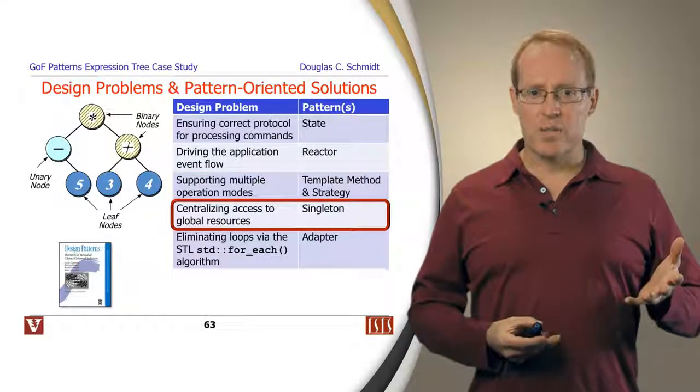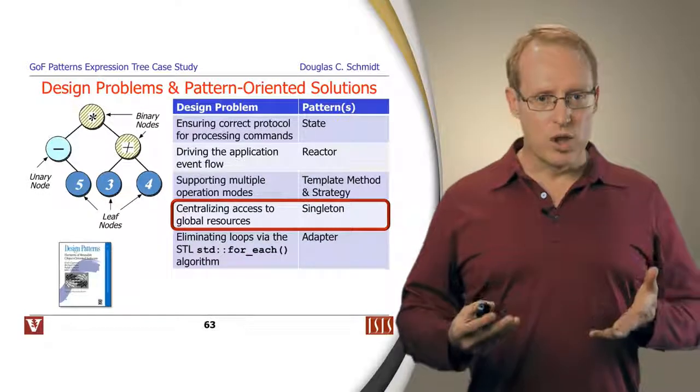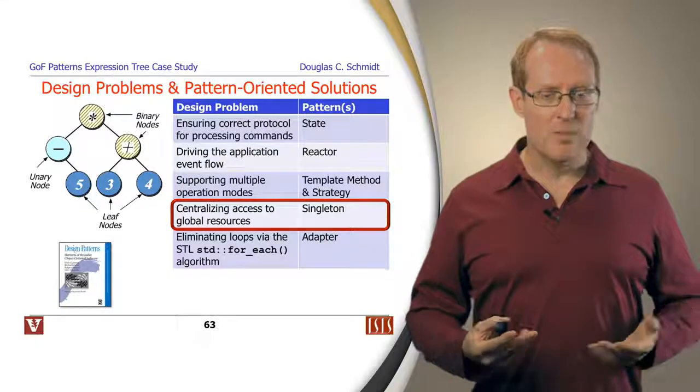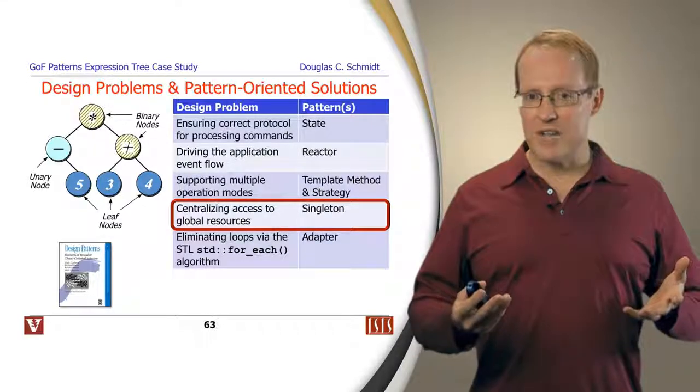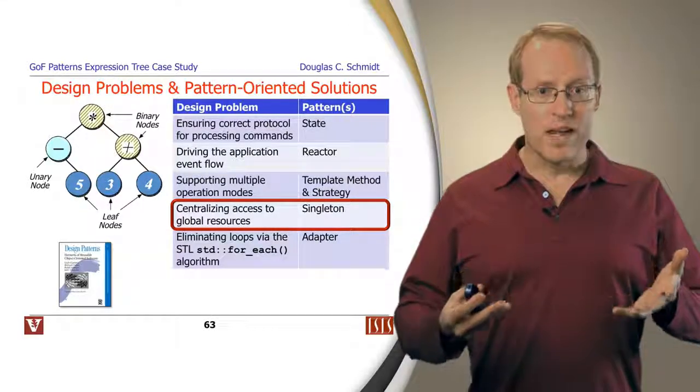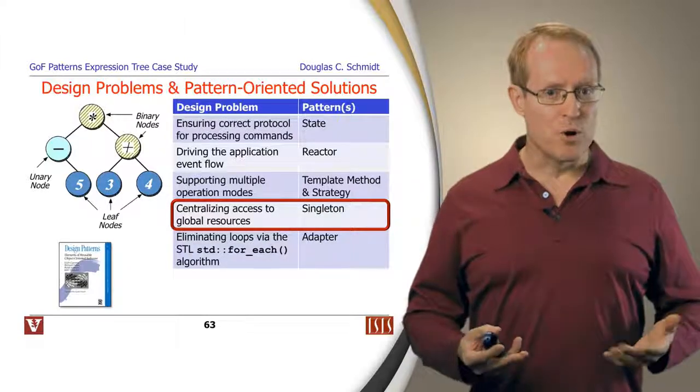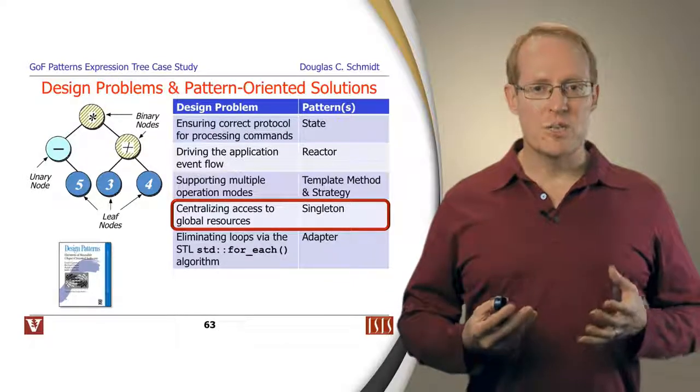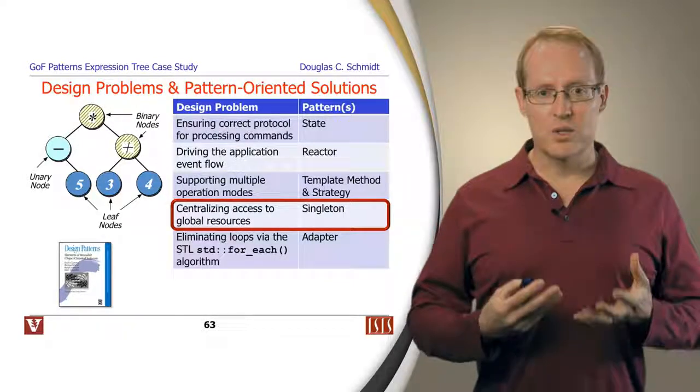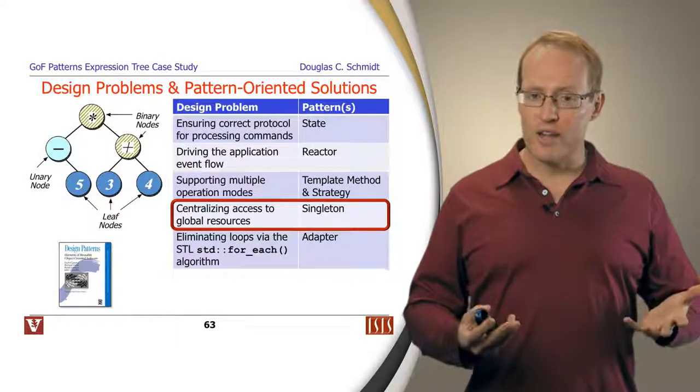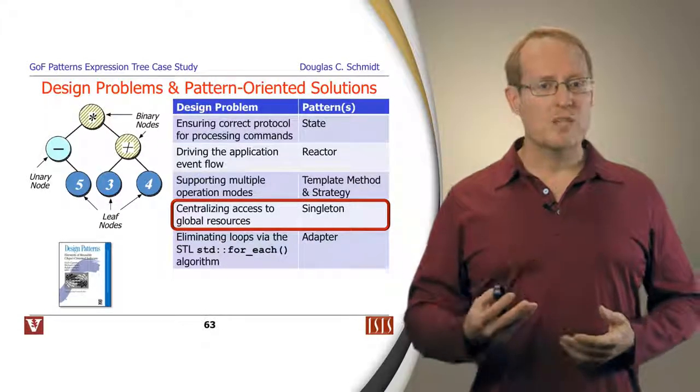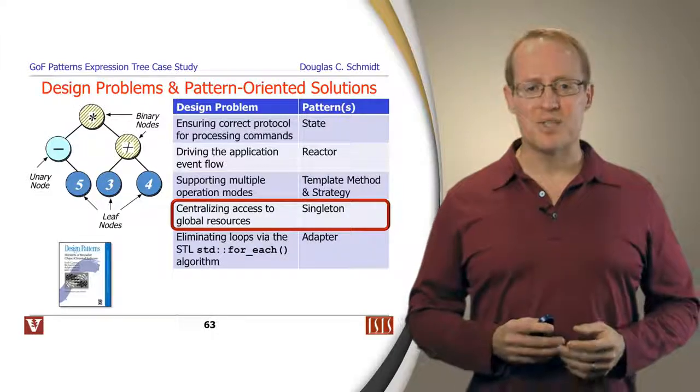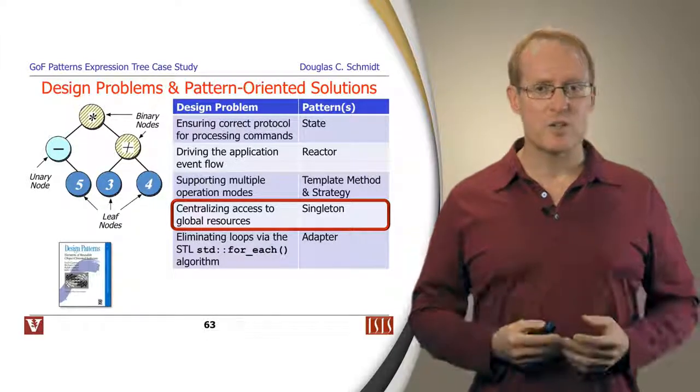We're also going to talk about ways of centralizing access to certain global resources, in particular the options that are passed in on the command line, or being able to access the single use of a reactor to run the event loop for our program. To do this we're going to apply the infamous singleton pattern, which can be used to provide a global access point to an object without requiring the use of global variables, which turns out to be a very useful thing to use in C++, even though you have to be somewhat careful to apply this sparingly and only under the right circumstances.